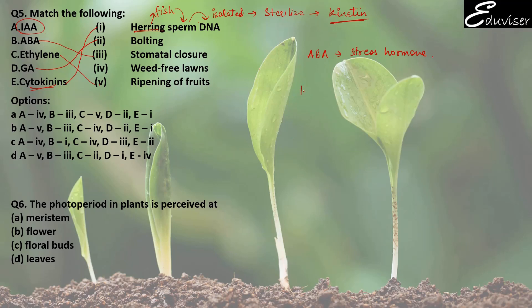IAA — Indole Acetic Acid — is basically 2,4-D. 2,4-D is a weed killer, a synthetic version of auxin. It will eliminate all large broad-leaved weeds. That is why IAA is associated with wheat-free lawns. So the correct matching gives answer A for question 5.